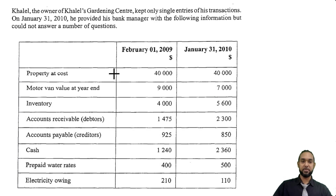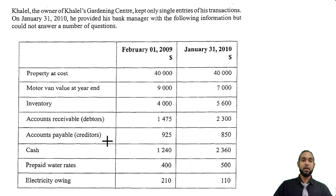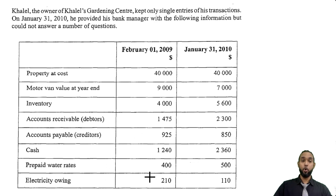So what do we have? We have property at cost, motor van value at year end — that's net book value — inventory, accounts receivable or debtors, accounts payable or creditors, cash, prepaid water rates, and electricity owing. So we have opening and closing balances for all of those things.